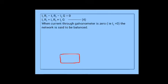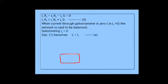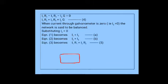Now the most important line: when the current through the galvanometer is 0, that is IG = 0, the network is said to be balanced. Substitute IG = 0 into equations 1, 2, 3, and 4. Equation 1 gives I1 = I3 — name it equation A. Equation 2 gives I2 = I4 — name it equation B. Equation 3 gives I1·R1 = I2·R2 — name it equation 5. Equation 4 gives I3·R3 = I4·R4 — name it equation 6.